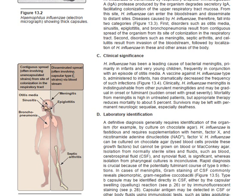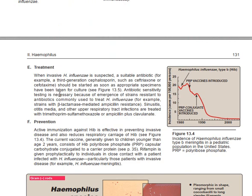Disseminated spread is via the blood vessels. For example, if you have septic arthritis and then later meningitis, that is not local transmission — it is disseminated spread. This disseminated spread usually involves the capsular type B strain, which bacteremically spreads through the bloodstream. This type B is the most virulent Haemophilus influenzae.